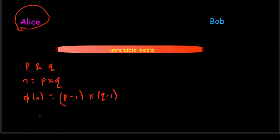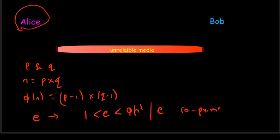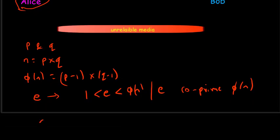She then selects a value e such that e is greater than 1 but less than phi(n). One more condition is that e must be a co-prime of phi(n). She then goes to the next step where she computes d, such that d equals e raised to the power of minus 1, mod phi(n).